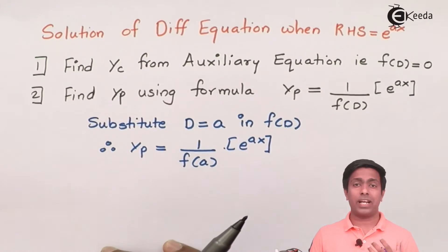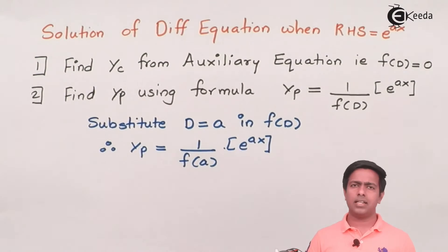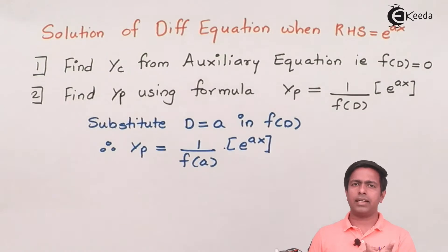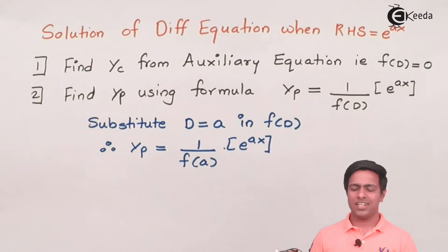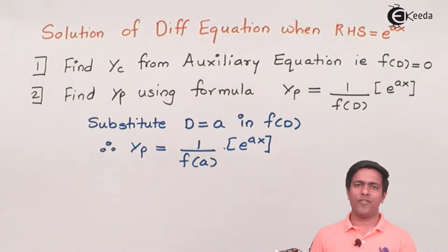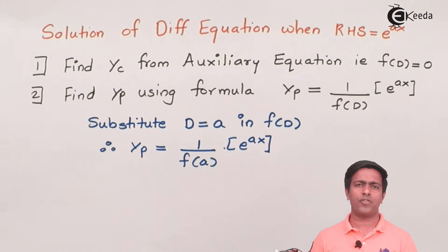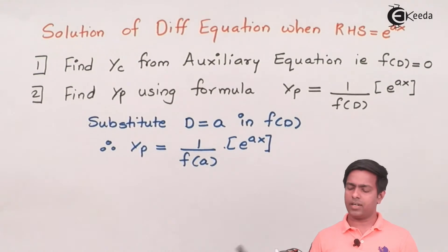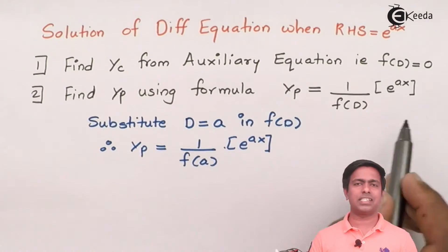There is one catch — what if the denominator f(a) is zero? This happens when f(D) contains a term like (D − a), because substituting D = a gives a − a = 0. If the denominator becomes zero, the answer becomes infinity, which is not acceptable for a particular integral. So whenever f(a) = 0, we do not accept that solution. Instead, we find the derivative of f(D), that is f'(D).